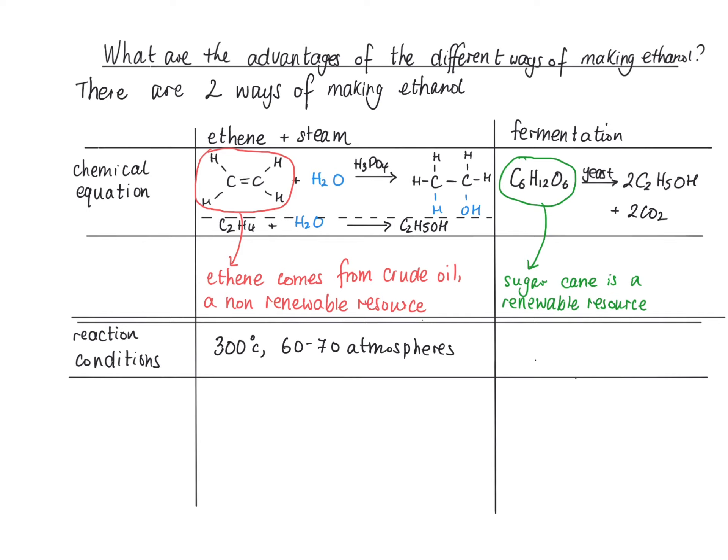The reaction conditions for ethene plus steam: you need 300 degrees C and 60 to 70 atmospheres of pressure. That's expensive and difficult. It takes lots of energy to make 300 degrees C, and you have to have very thick metal vessels to make 60 to 70 atmospheres of pressure.